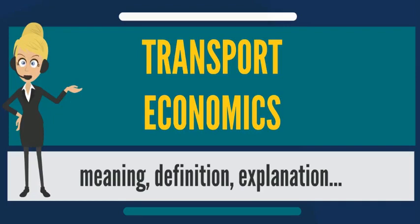In transport, demand can be measured in number of journeys made or in total distance traveled across all journeys — for example passenger kilometers for public transport, or vehicle kilometers of travel (VKT) for private transport. Supply is considered to be a measure of capacity. The price of the good — travel — is measured using the generalized cost of travel, which includes both money and time expenditure.